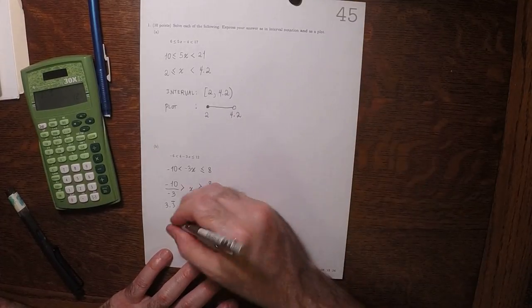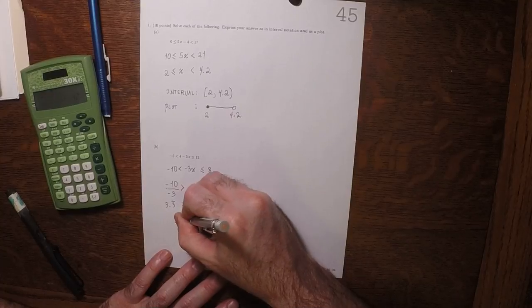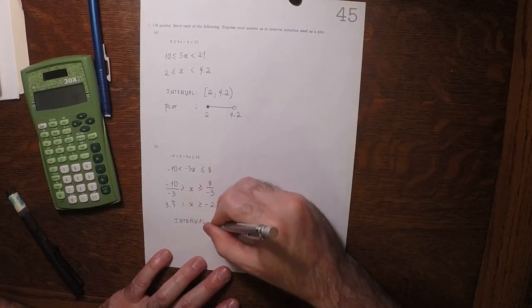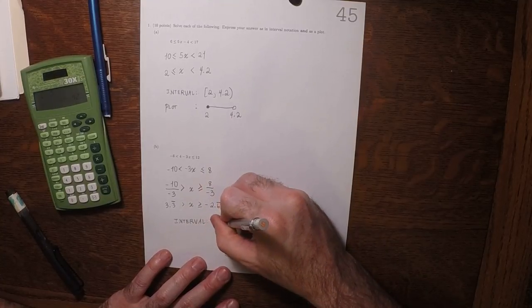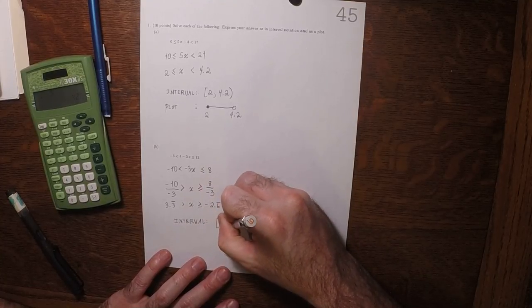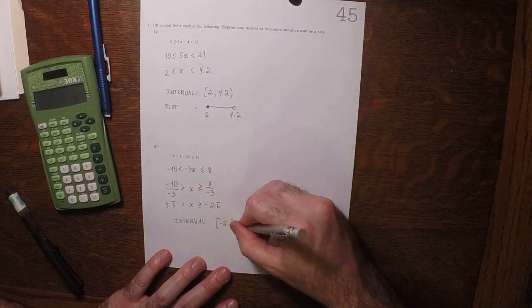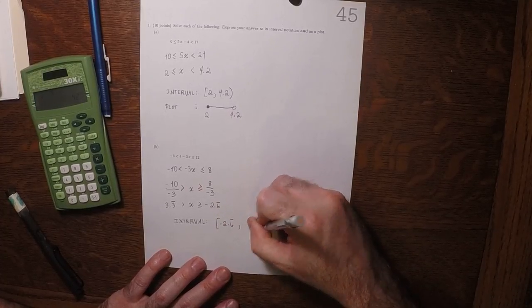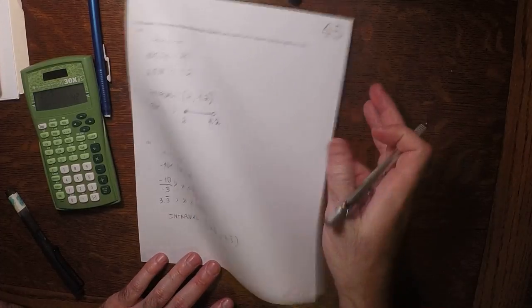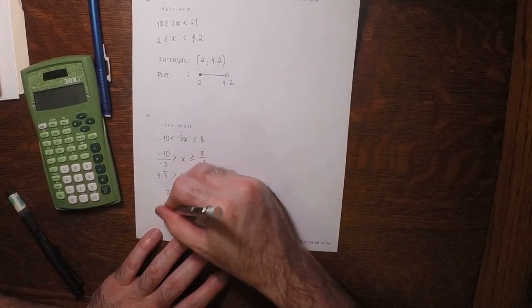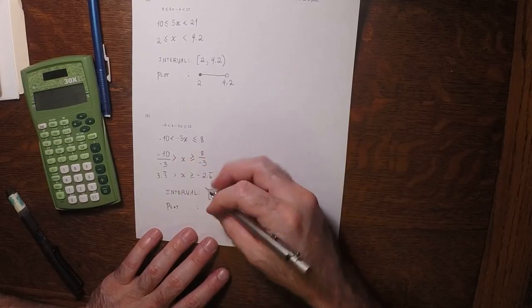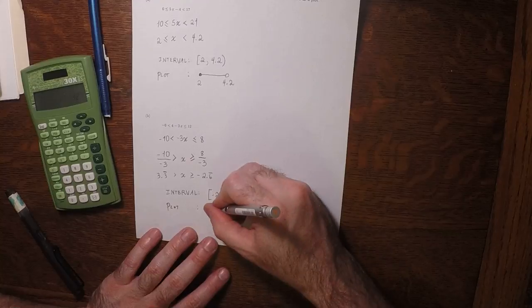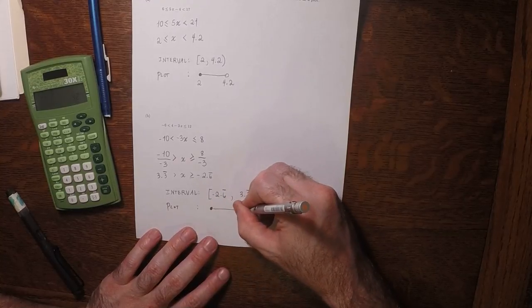So then, as an interval, it is negative 2.6 repeating to 3.3 repeating, open. And that's the answer.